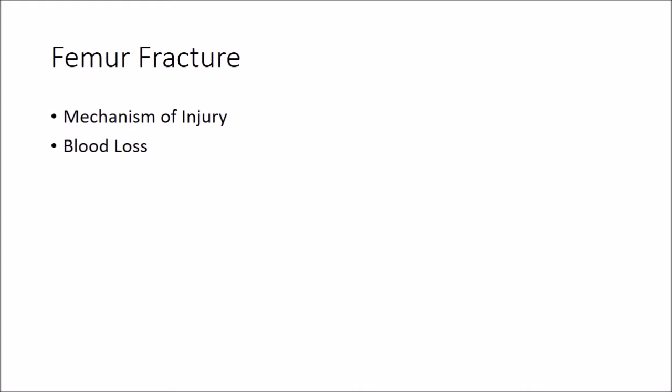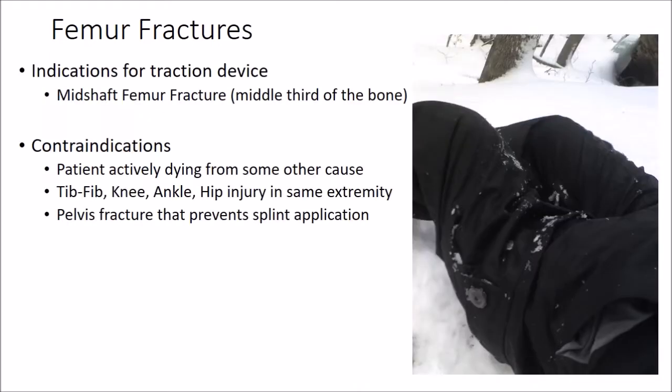Because the thigh is so muscular and fractures are usually associated with spasm of the surrounding muscles, this tends to pull the sharp bone ends through the tissue, making the damage worse and causing severe pain. To help relieve the muscle spasm and reduce the other complications of femur fracture, we use a traction device or traction splint.